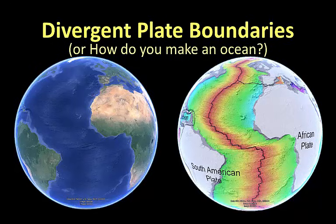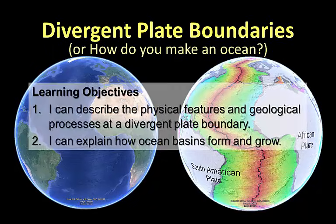Earth is over 4 billion years old, but all of the rocks underlying the world's ocean basins are much younger and formed less than 200 million years ago. Earth is constantly recycling its ocean basins, and the first part of this process is the formation of new oceanic lithosphere at divergent plate boundaries. In this video, we will discuss the geological features and processes that characterize divergent plate boundaries, and talk about how ocean basins are created. We'll start by reviewing some observations about divergent plate boundaries.